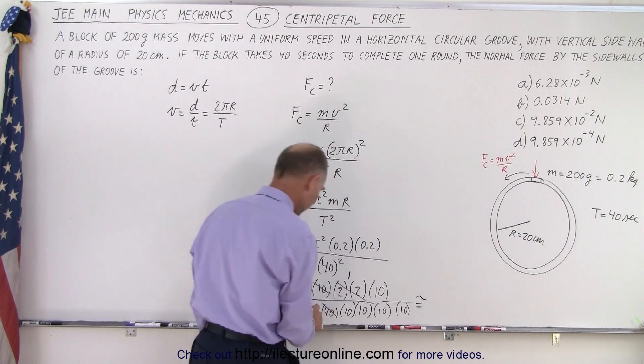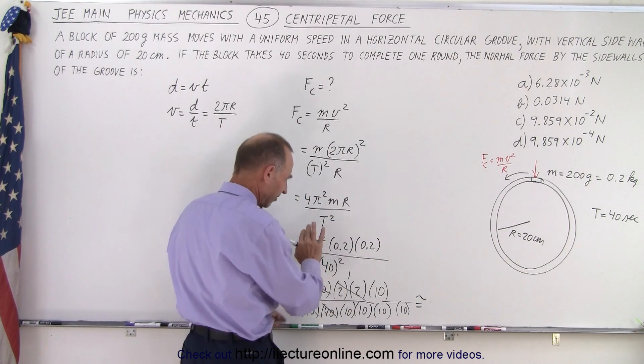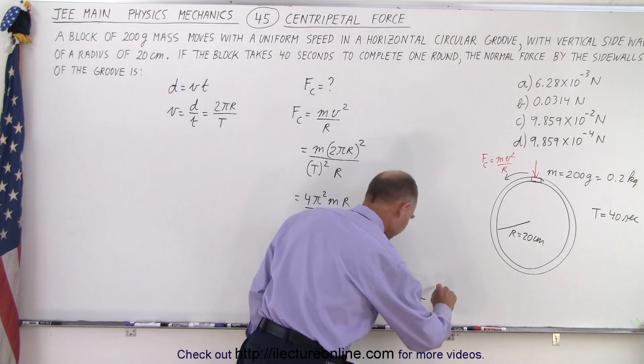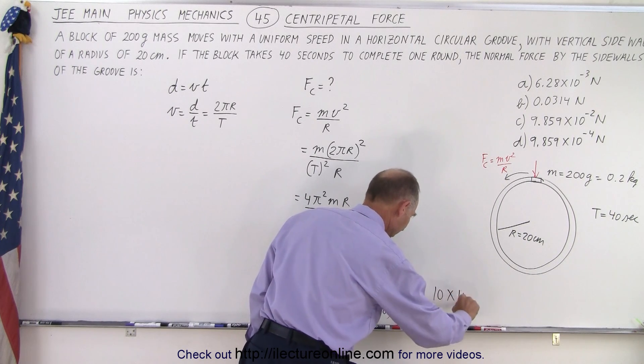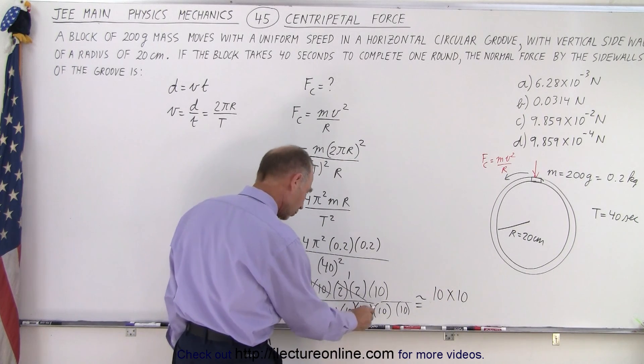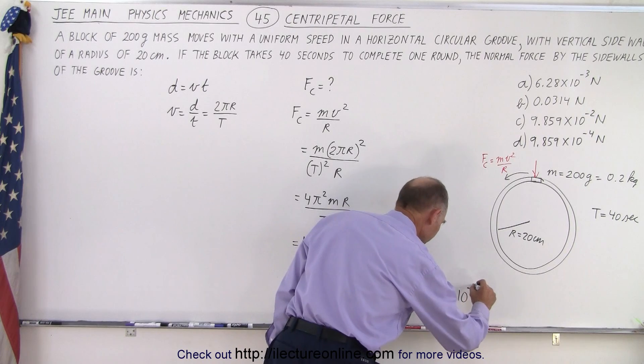this is approximately equal to, because I don't know exactly what π² is. It's a little bit less than 10. So it would be 10 times 10 to the... and I have 1, 2, 3, 4 zeros in the denominator, to the minus 4. And, of course, that would be Newtons.